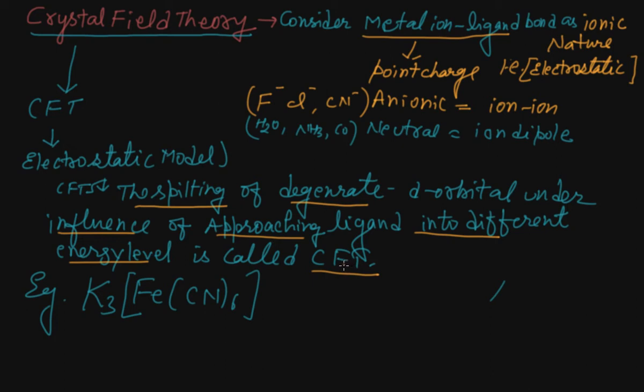The five d orbitals in an isolated gaseous metal have the same energy - they are degenerate. This degeneracy is maintained if a symmetrical field of negative charge surrounds the metal atom or ion. When this negative field is due to the ligand in a complex, it becomes asymmetrical.